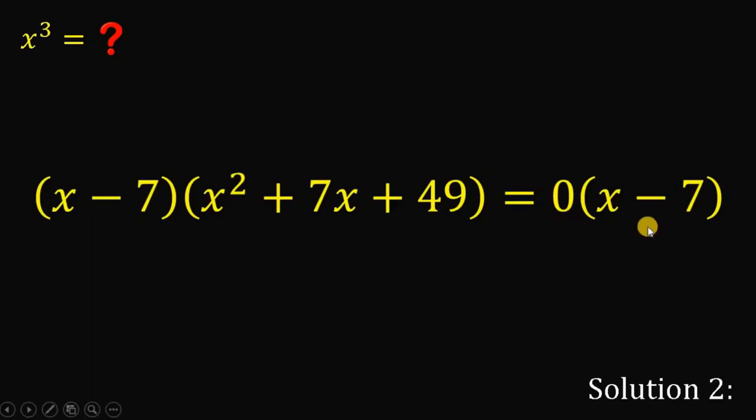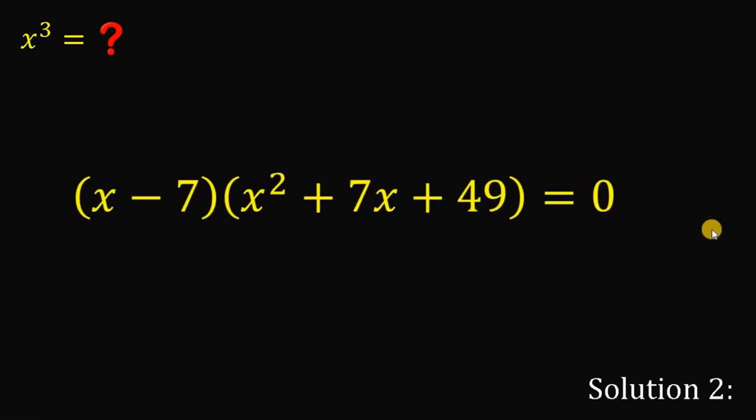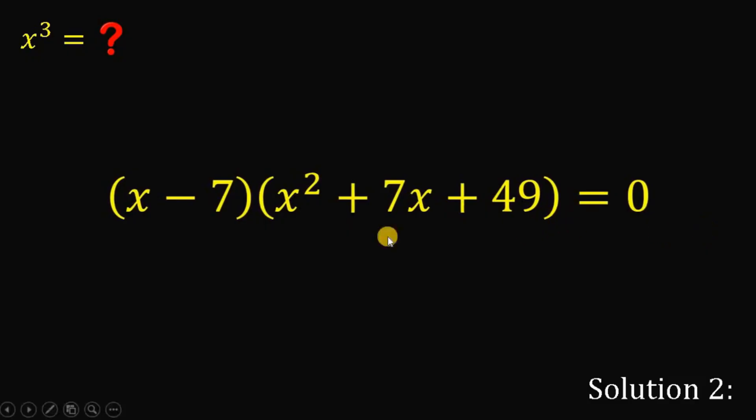Now, on the right-hand side, 0 times x minus 7 is just 0. Now, let's focus on the left-hand side. This is very interesting. Because if we have x minus 7 times x squared plus 7x plus 49, this is the same thing as this identity. x minus a times x squared plus ax plus a squared equals x cubed minus a cubed.